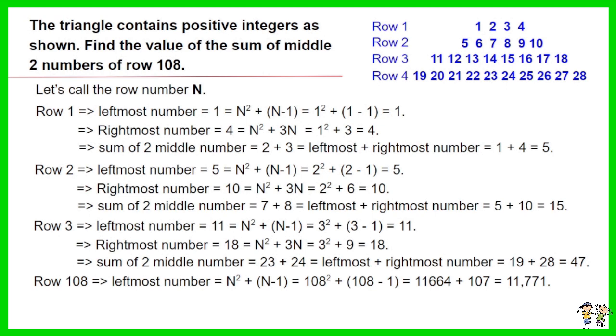The rightmost number of row 108 equals 108² + 3 times 108, equals 11,664 plus 324, the result is 11,988.